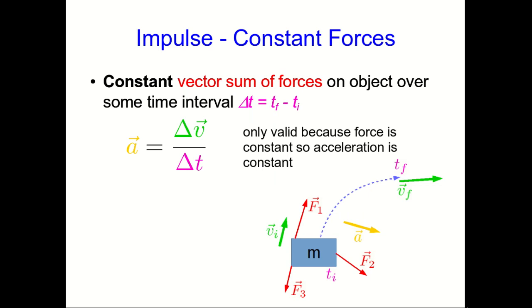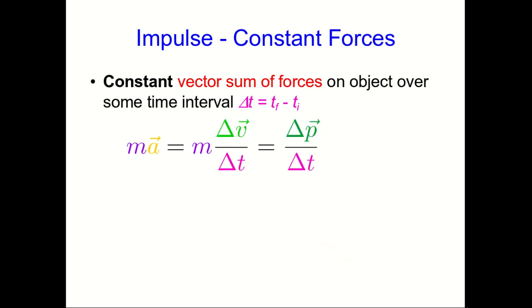We don't need a derivative. We can just say that the acceleration is a delta v over delta t. Let's multiply both sides by the inertia, and we get this, which brings our delta p into the equation, and we can solve for that change of momentum.